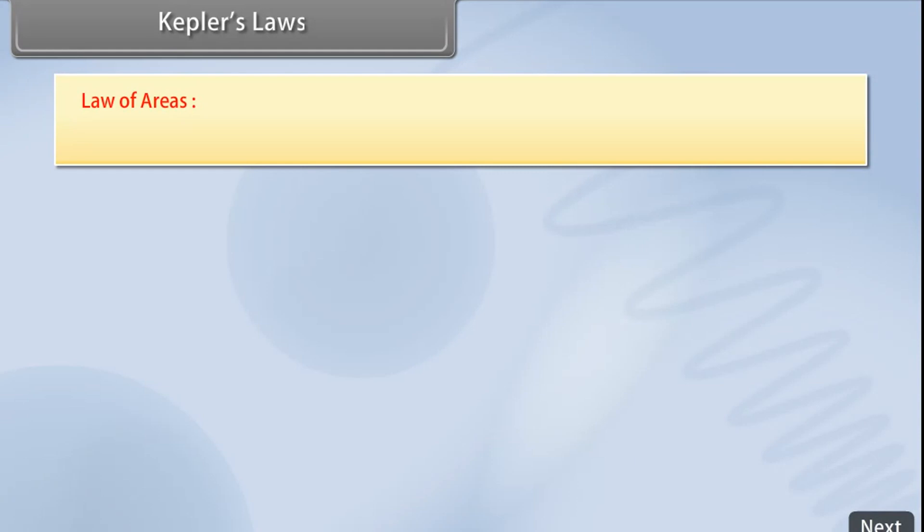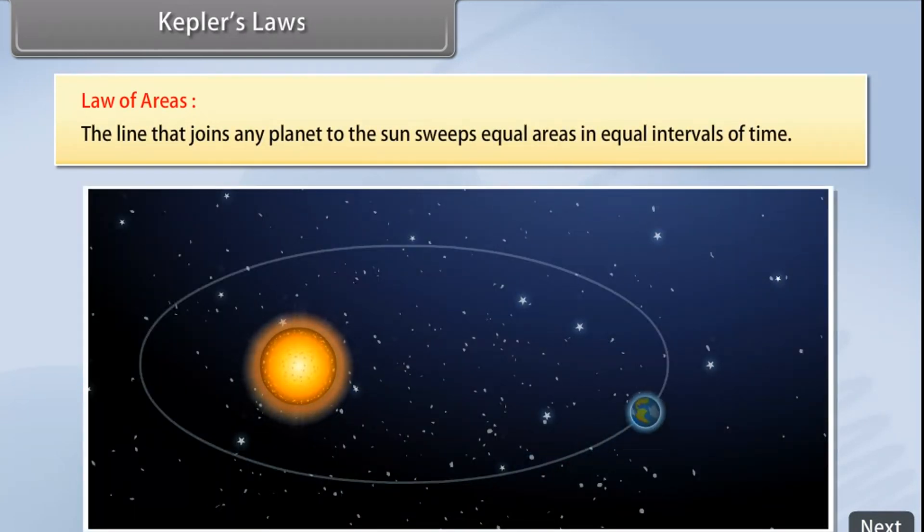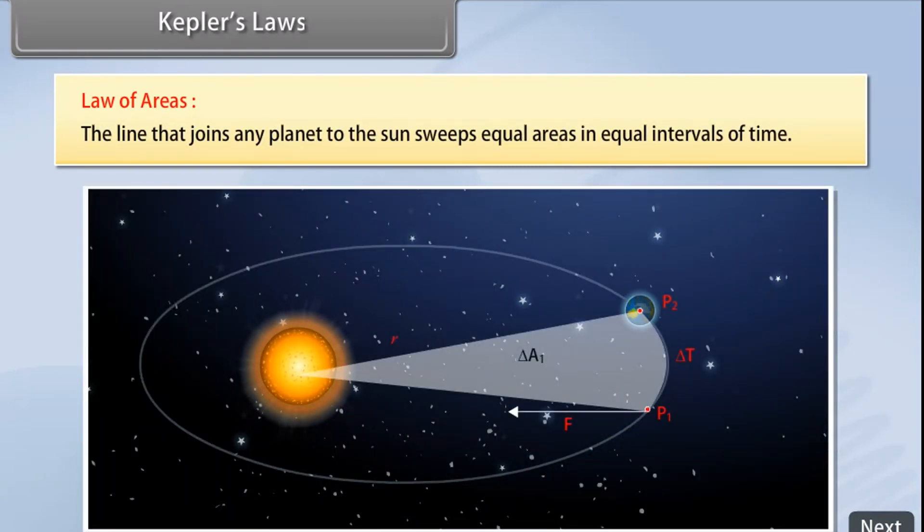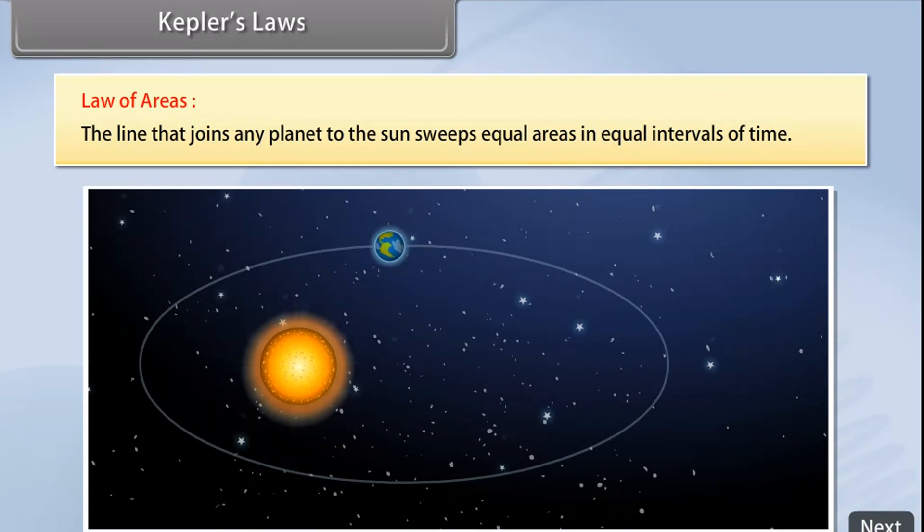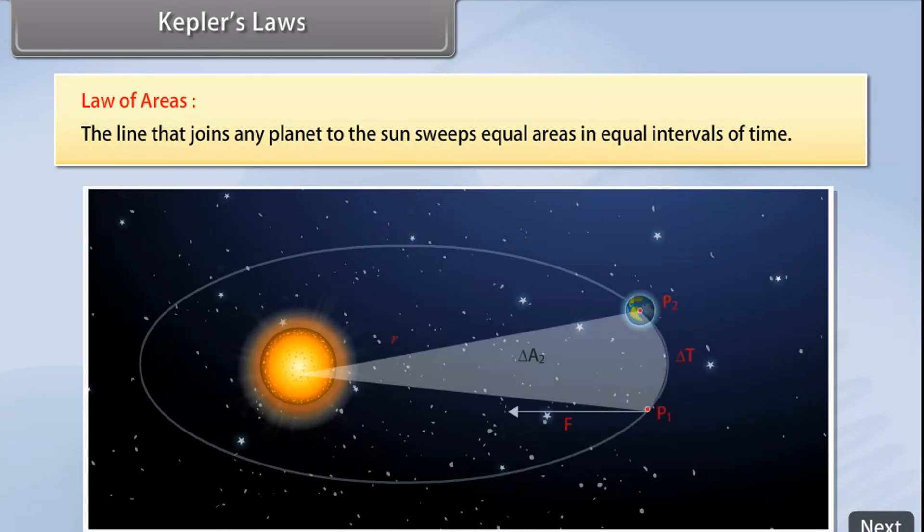Law of Areas: The line that joins any planet to the sun sweeps equal areas in equal intervals of time. This law comes from the observation that planets appear to move slower when they are farther from the sun than when they are nearer.